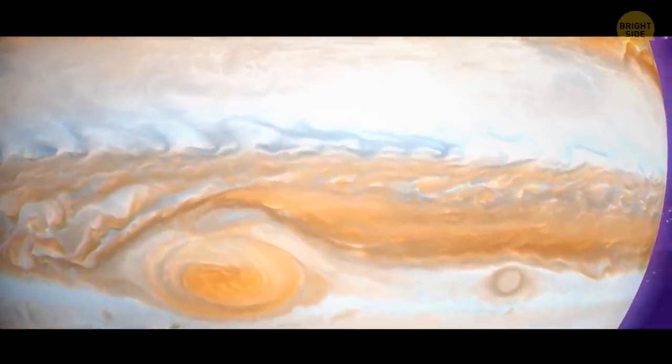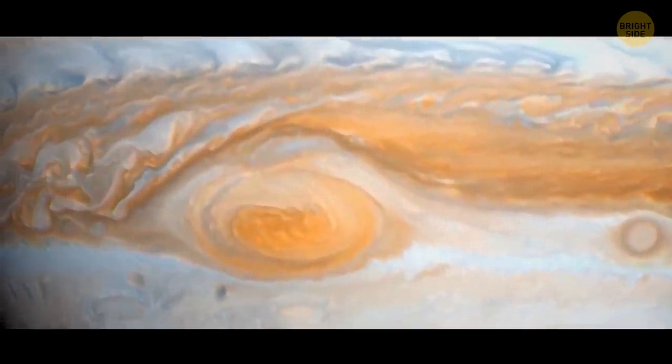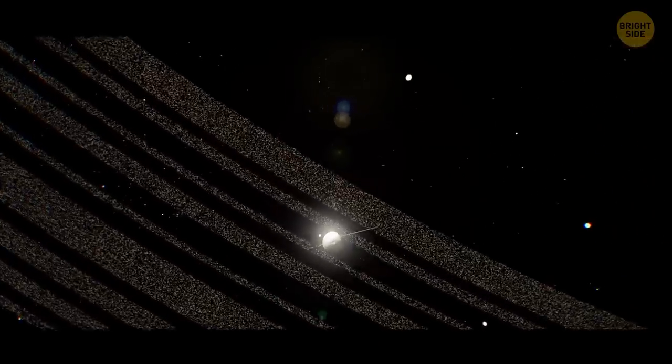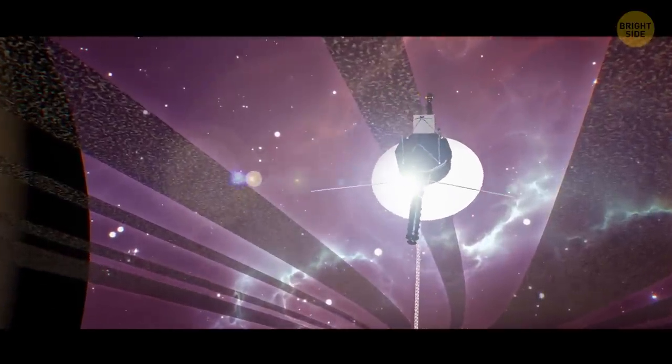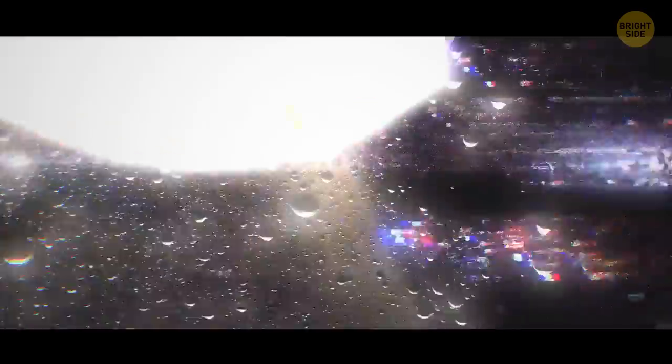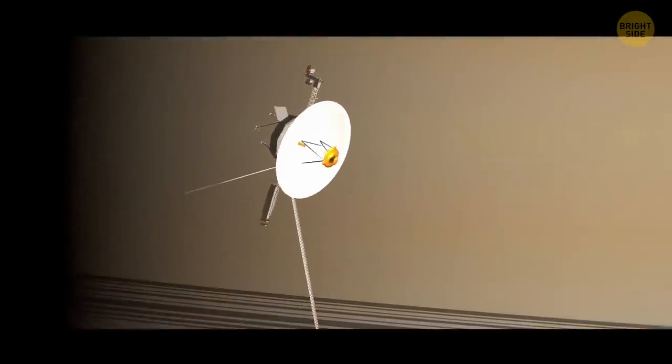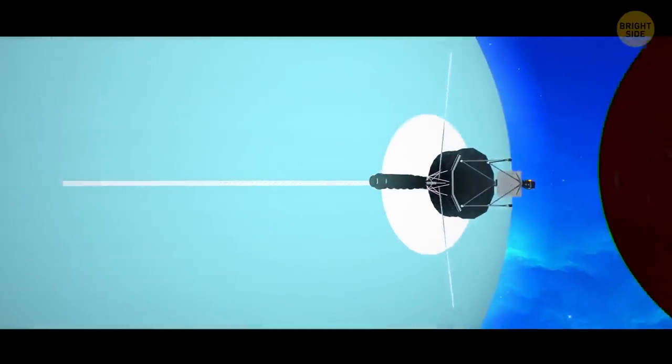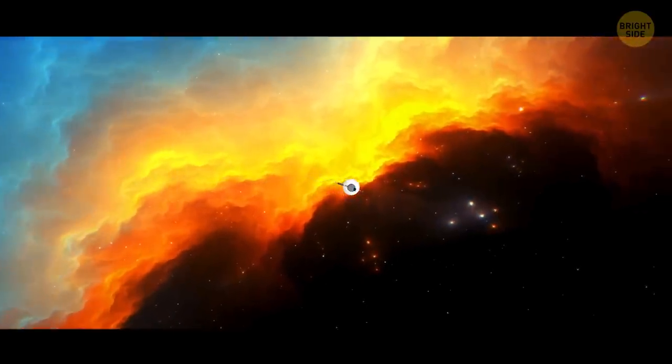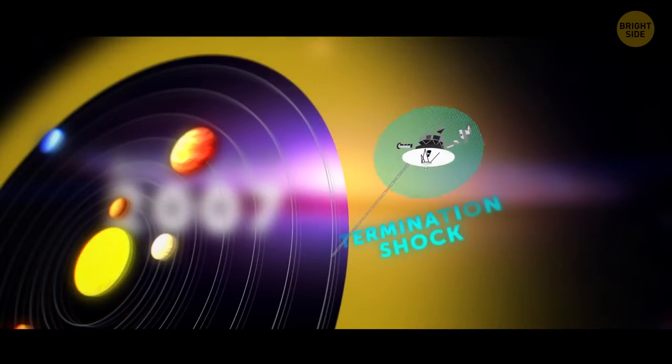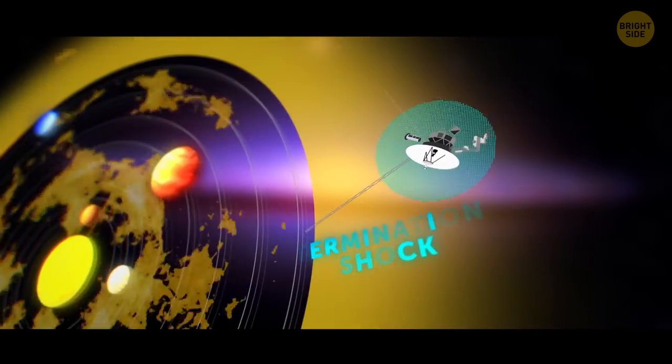Two years after its launch, Voyager 2 started transmitting the first images of Jupiter. The space probe provided scientists with information about Io and Europa, some of Jupiter's largest moons. The distance between the spacecraft and the planet was around 400,000 miles. That's when the probe noticed changes in the shape and color of the great red spot. Two years later, Voyager 2 reached Saturn. It discovered spokes and kinks in some of the planet's rings. While flying behind Saturn, it passed through the plane of Saturn's rings at a speed of around 8 miles per second.